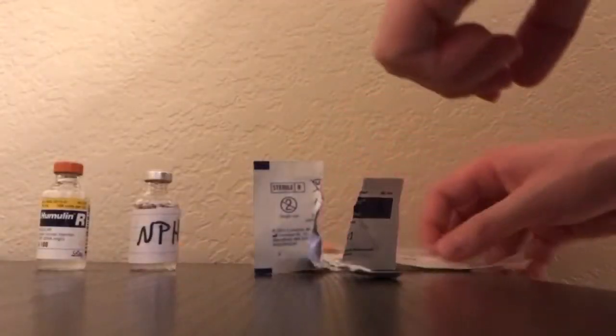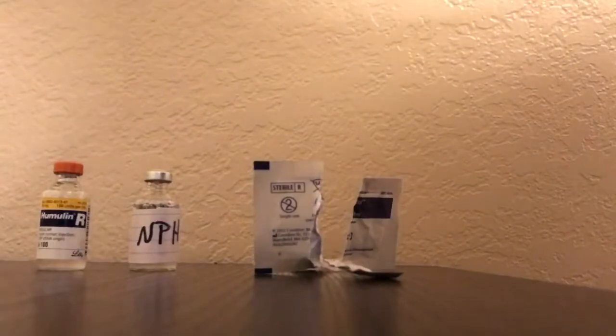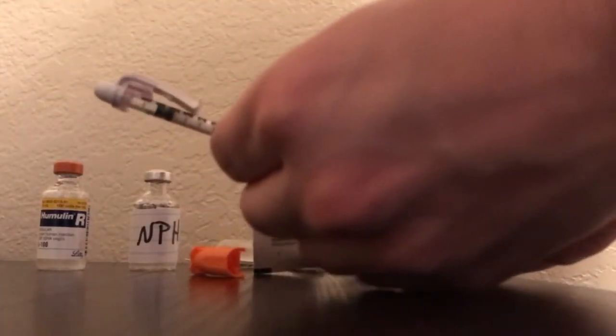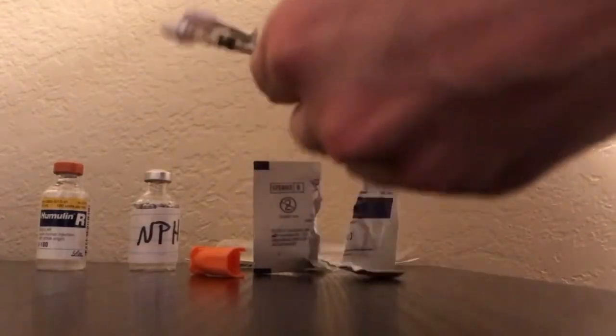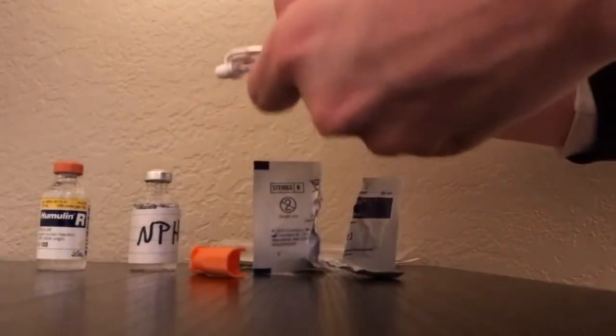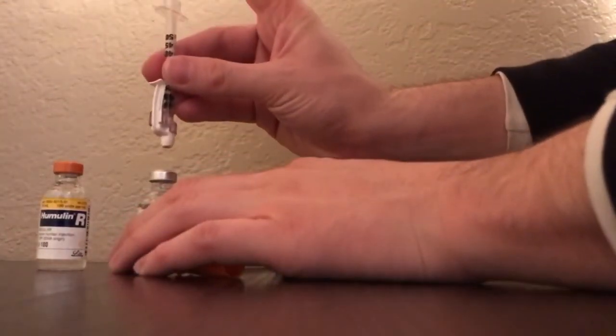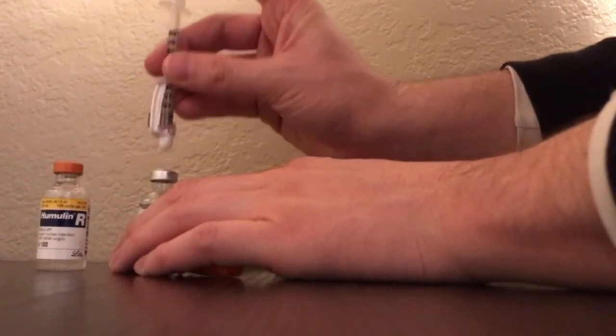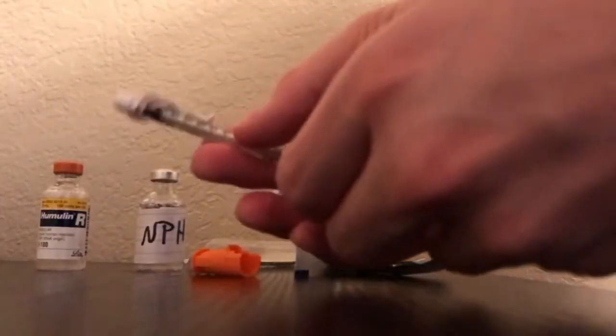Grab your syringe and open it up. We're going to do 10 units. Take 10 units of air, only air, and place it into the cloudy NPH solution. Make sure you get a firm grip, inject that 10 units of air, and then take it out.